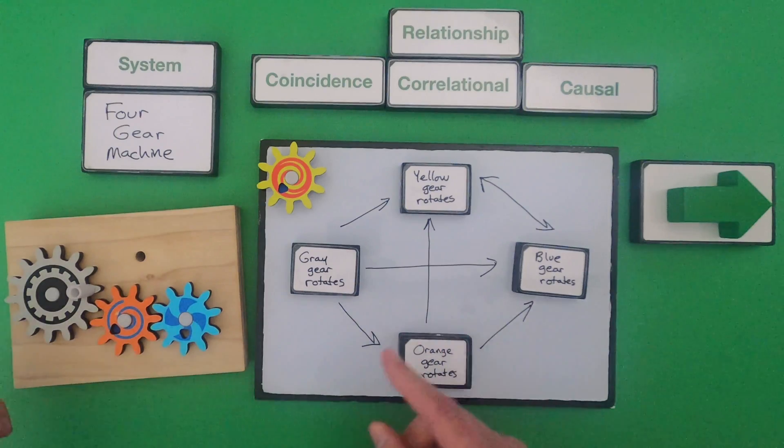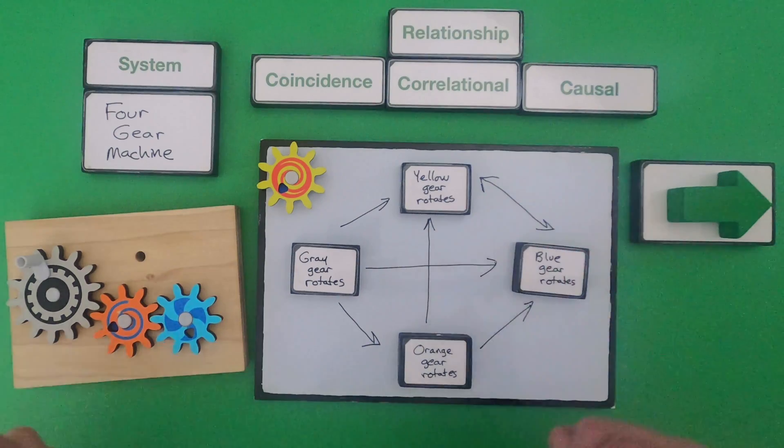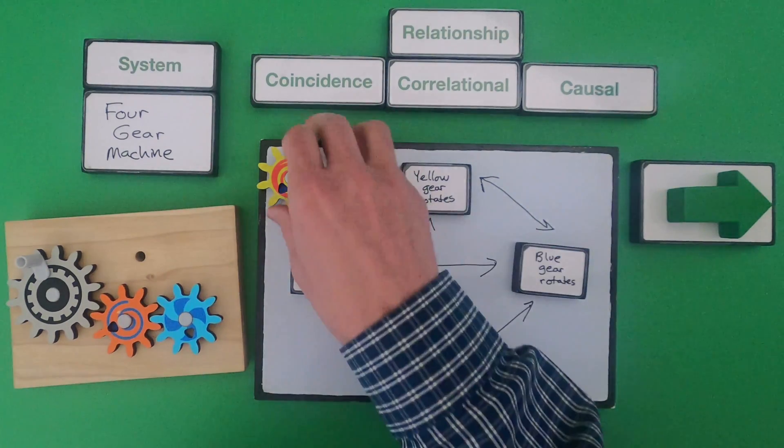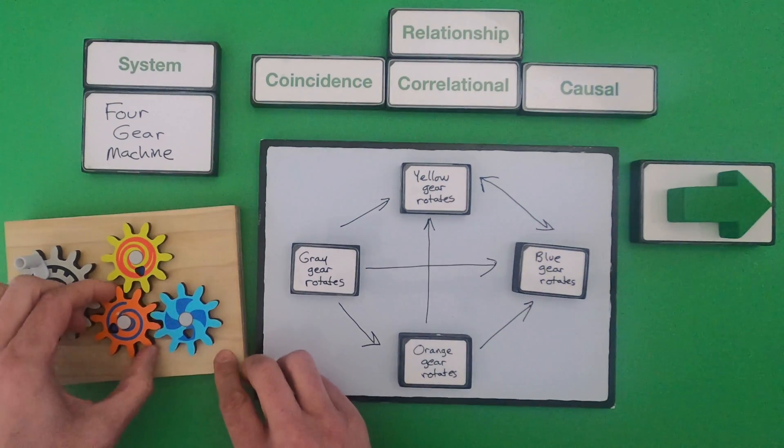So if I remove the yellow gear and let's see what happens. So that makes sense. So when I'm removing the yellow gear the gray gear can't cause it to move because it's not there and the orange gear can't cause it to move. And so I haven't learned anything new. Let's remove the orange gear though.